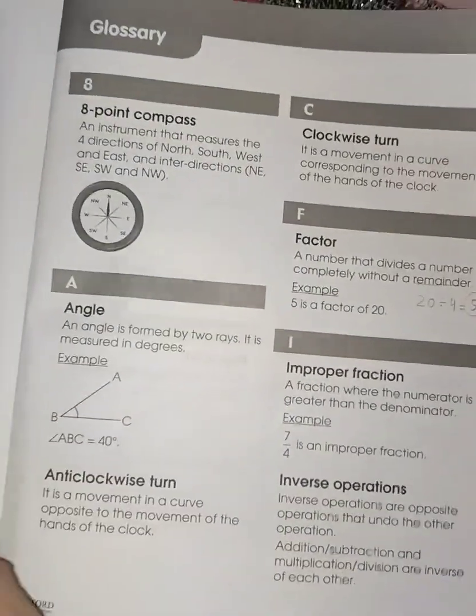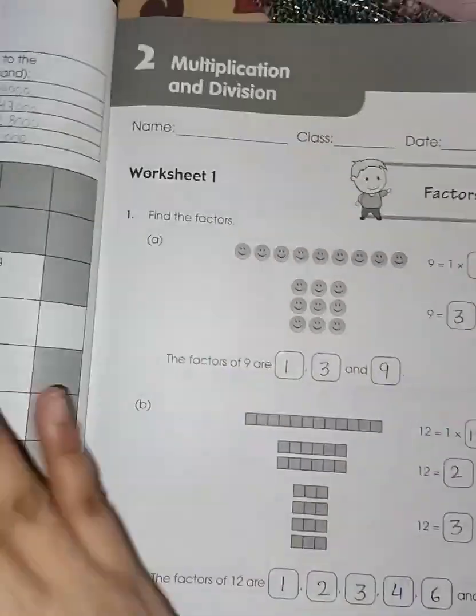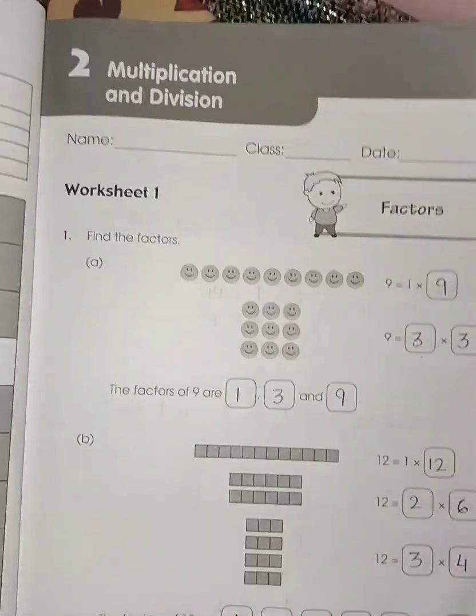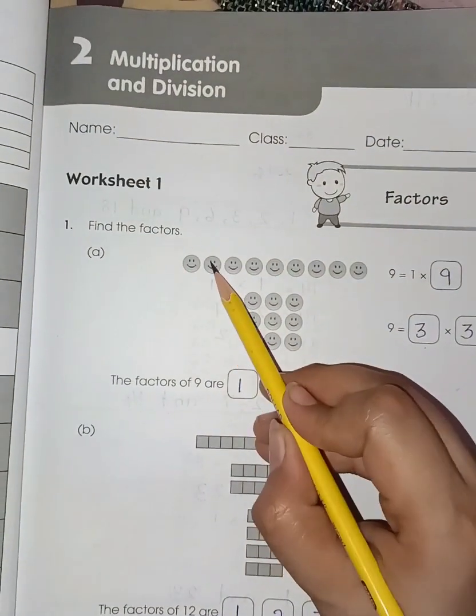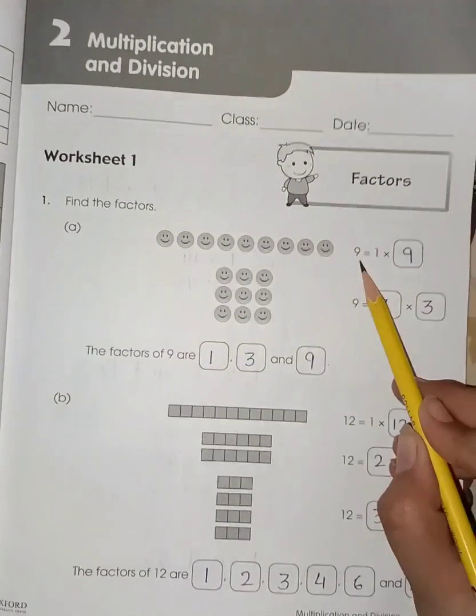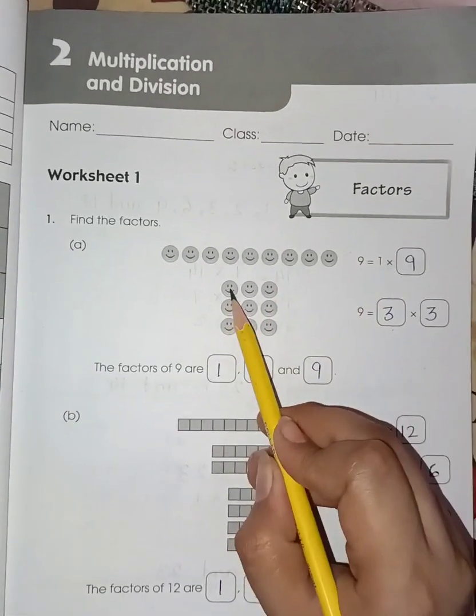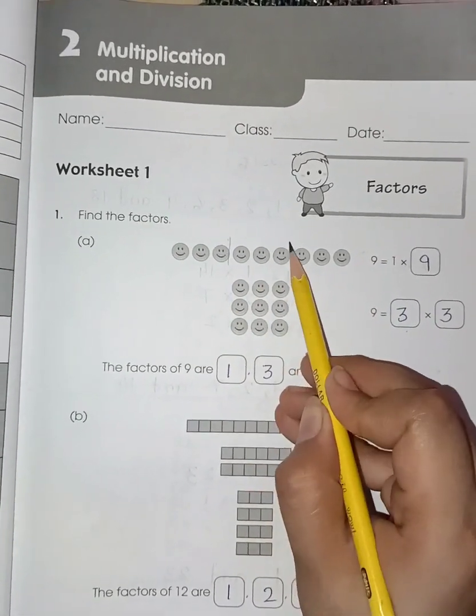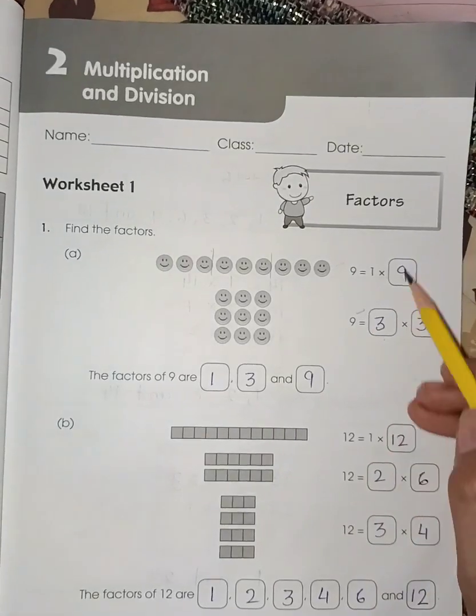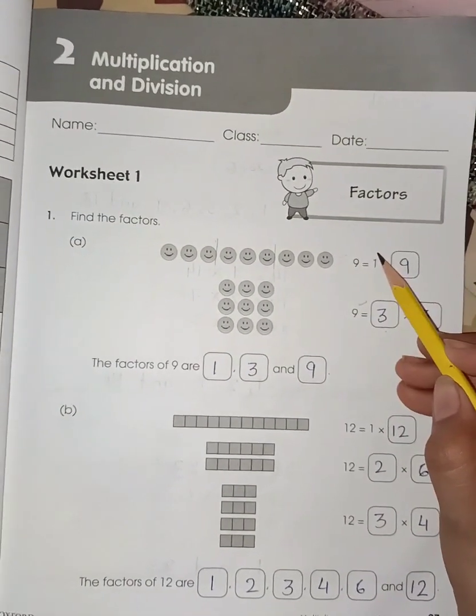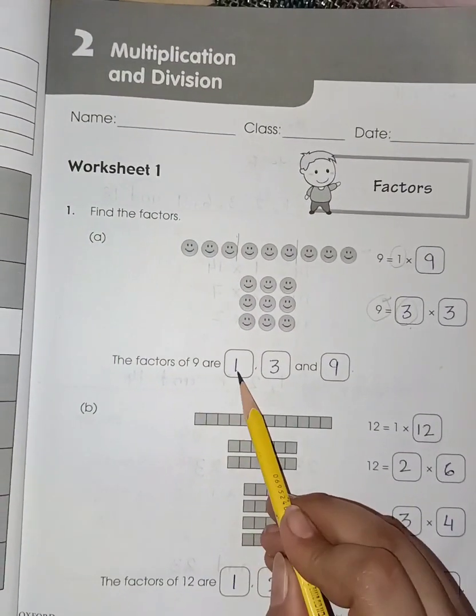So let's start the worksheet factor. Here you can see the smiley faces. There are 9 faces. 1 multiplied by 9 is 9, and 9 multiplied by 1 is 9. Now you have to make the factor of this 9. You can make the factor with 3 and 3. So 3 times 3 is 9. It means we have 3 factors of 9 which is 1, 3 and 9. So the factors of 9 are 1, 3 and 9.